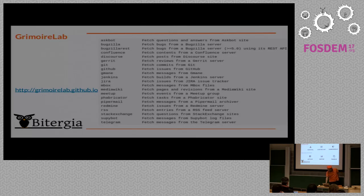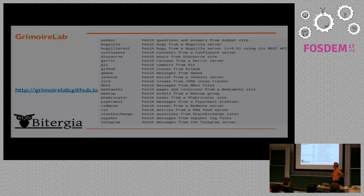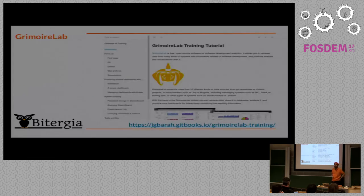This is the list of backends that Percival and Grimoire Elk are supporting right now. You can see the ones you have, but also things like Meetup, Phabricator, Pipermail, Stack Exchange, Superset, vote, Gmane, and many others.